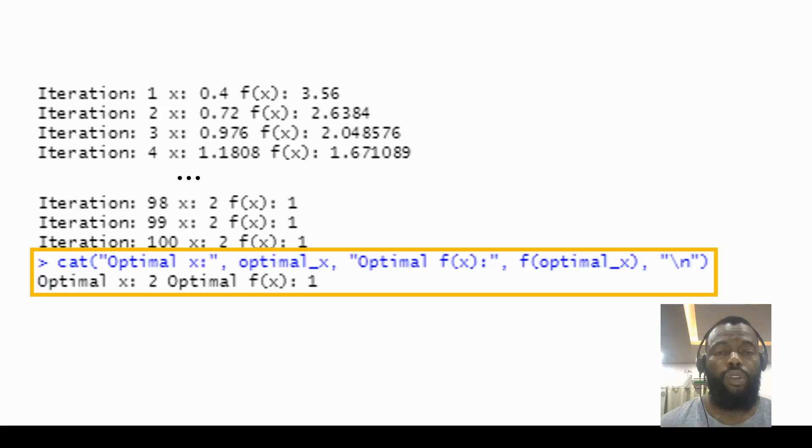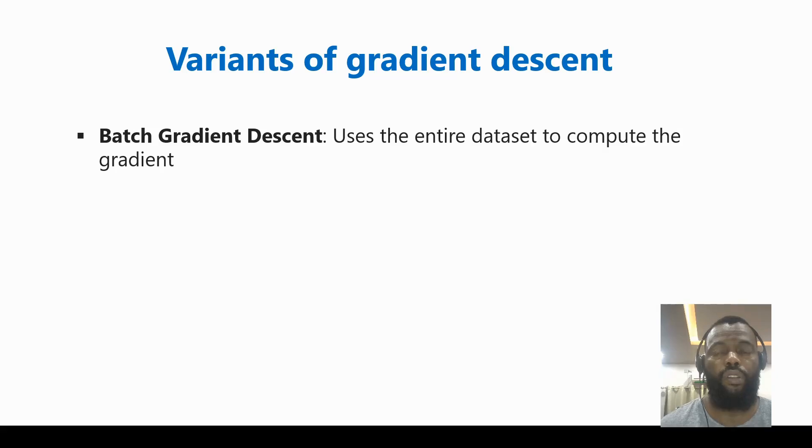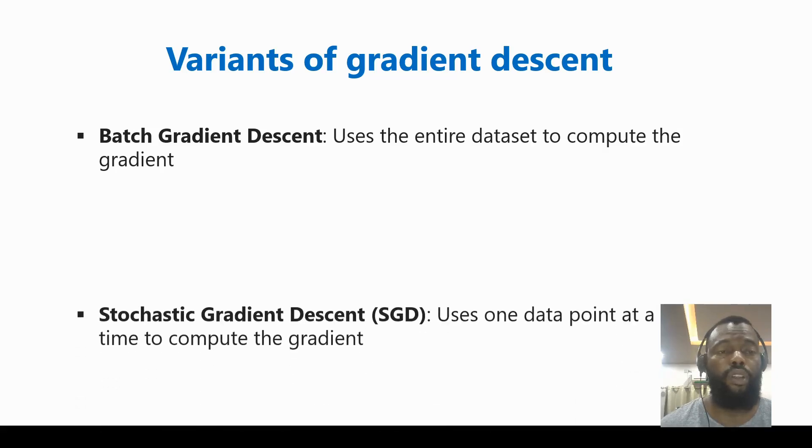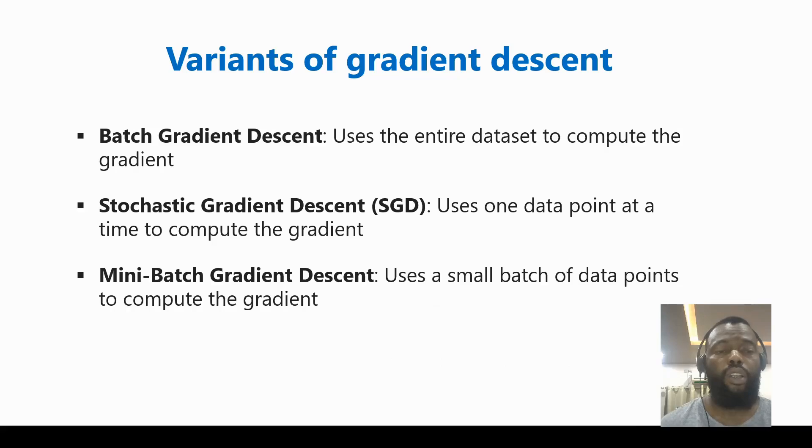Also we have to know that there are some variants of gradient descent. We have batch gradient descent, which uses the entire dataset to compute the gradient. We have stochastic gradient descent, which uses one data point at a time. And we have mini-batch gradient descent, which uses a small batch of data points to compute the gradient.